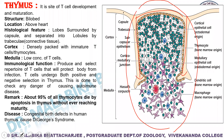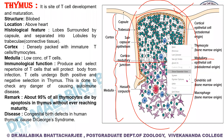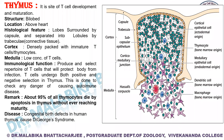Each lobule has a cortical region and a medulla. The cortex is densely packed with immature T cells called thymocytes, which are of bone marrow origin. The medulla is sparsely populated with thymocytes. Both the cortex and the medulla of the thymus are criss-crossed with a three-dimensional stromal cell network.